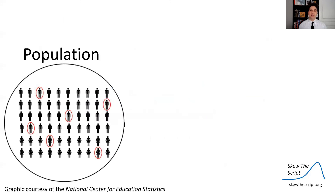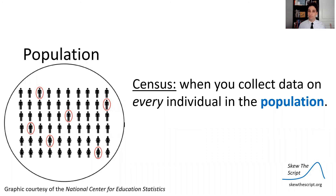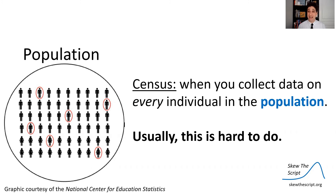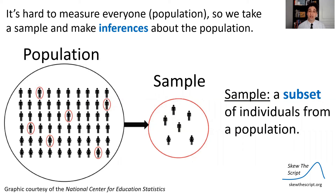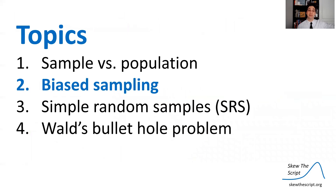First we're going to talk about sampling from a population. A population is all individuals in a group. If you want to figure out an aspect of the population, one thing you could do is a census — that's when you collect data on every individual in the whole population. Censuses, though, are very hard to do and take a while. So instead, most of the time, if we want to estimate something in a population, we get a sample. A sample is a subset of individuals in a population that we can easily measure and then make inferences about the whole group. This is the study of statistics: using samples to make inferences about populations.